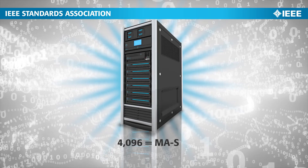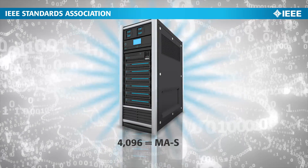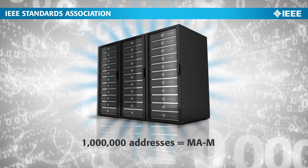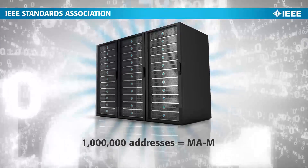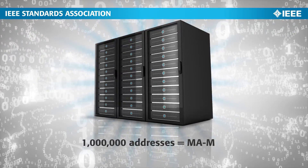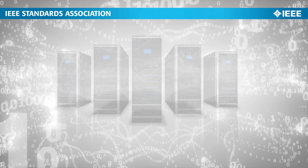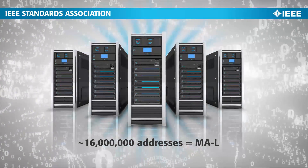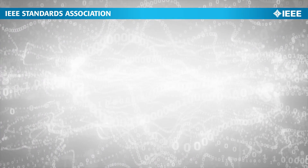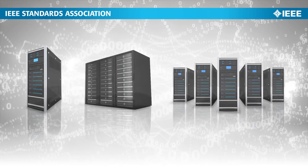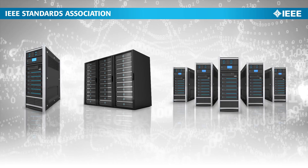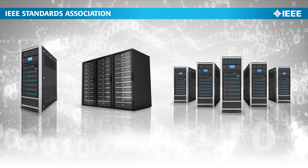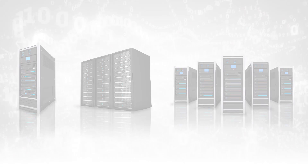A small block provides 4,000 addresses. A medium block provides 1 million addresses. A large block provides 16 million addresses. We recommend getting the smallest block of MAC addresses that meets your needs.